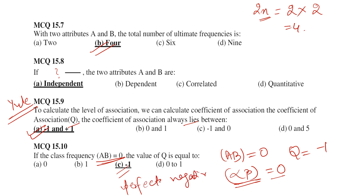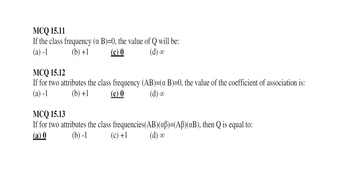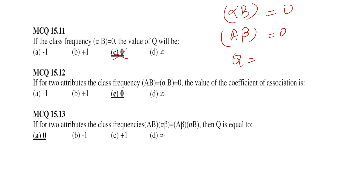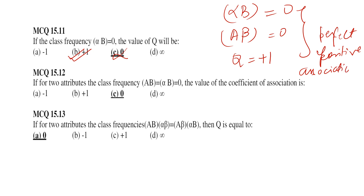When Q = -1, it represents perfect negative association — similar to perfect negative correlation in correlation analysis. Conversely, when the frequency of αB = 0 or the frequency of Aβ = 0, the coefficient of association Q equals positive 1, representing perfect positive association.